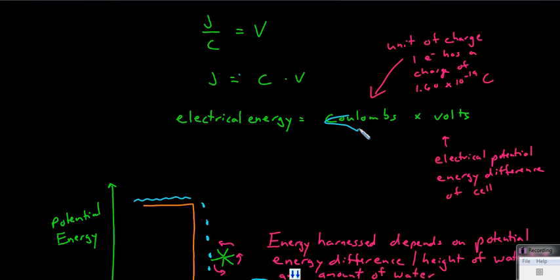I'll remind you that a coulomb is a unit of charge. One electron has a charge of 1.60 times 10 to the negative 19 coulombs, or a coulomb is the charge of about 6.2 times 10 to the 18 electrons. Voltage describes the electrical potential energy difference of the cell between the anode and the cathode.